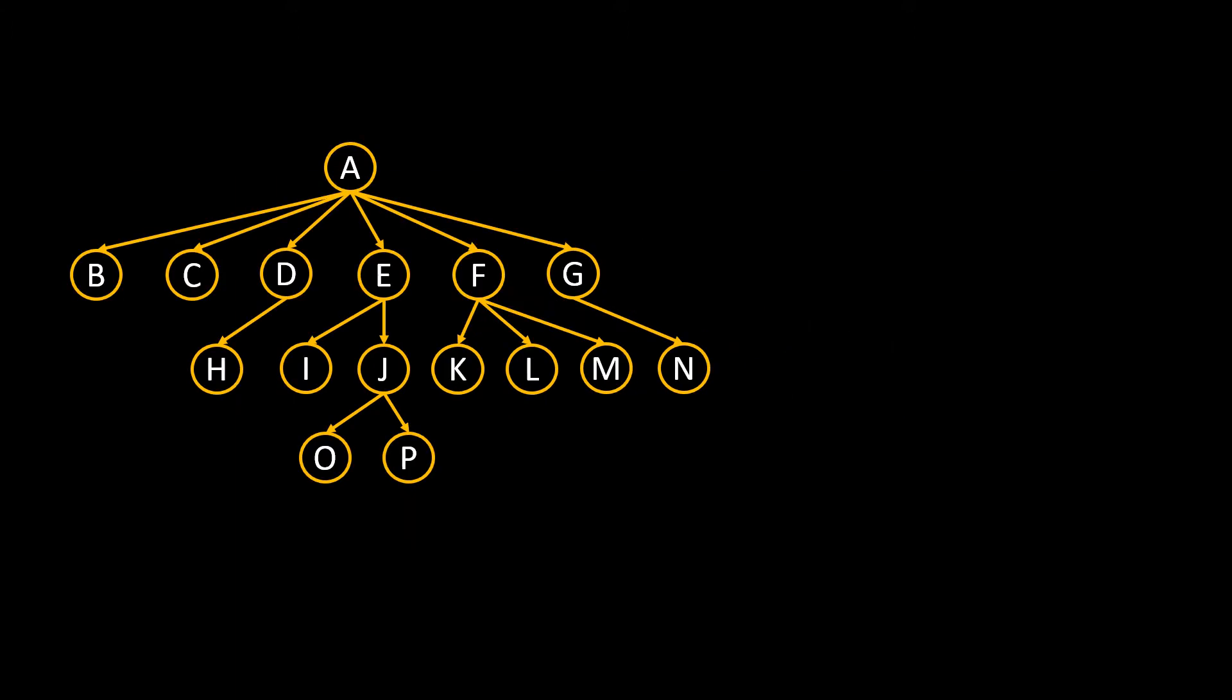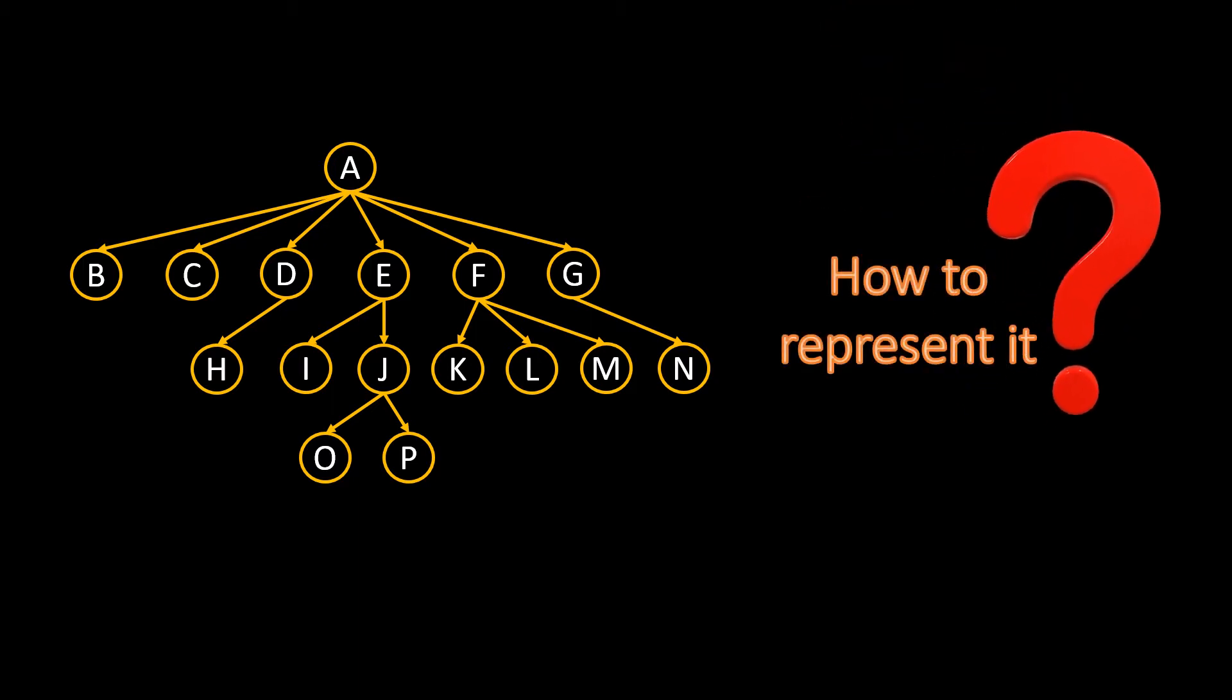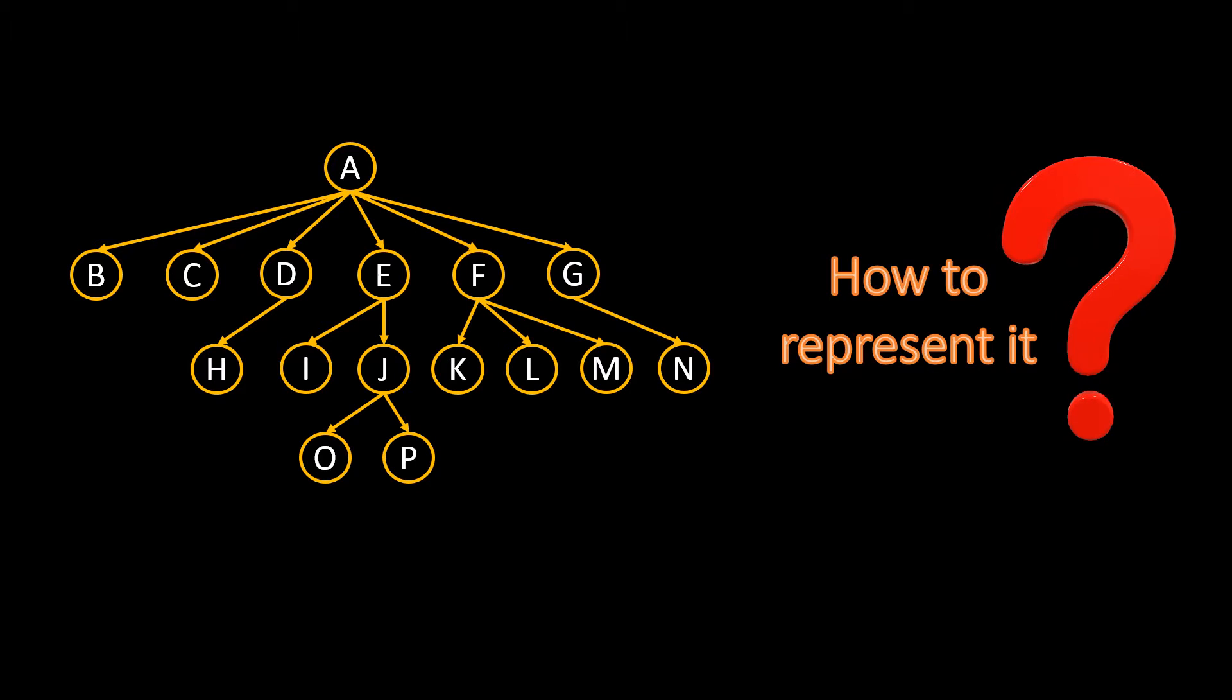We represent a binary tree node with three attributes: a value, the left and the right tree node. This would not suffice in an n-ary tree. So, how do we represent it?